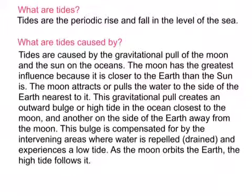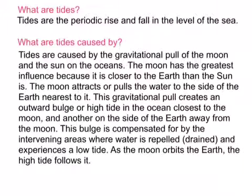The moon attracts or pulls the water to the side of the earth closest to it. This gravitational pull creates an outward bulge or high tide in the ocean close to the moon, and another one on the opposite side of the earth. In between, the bulge is compensated by the intervening areas being drained of their water, so they experience a low tide. As the moon orbits the earth, the high tide follows it.